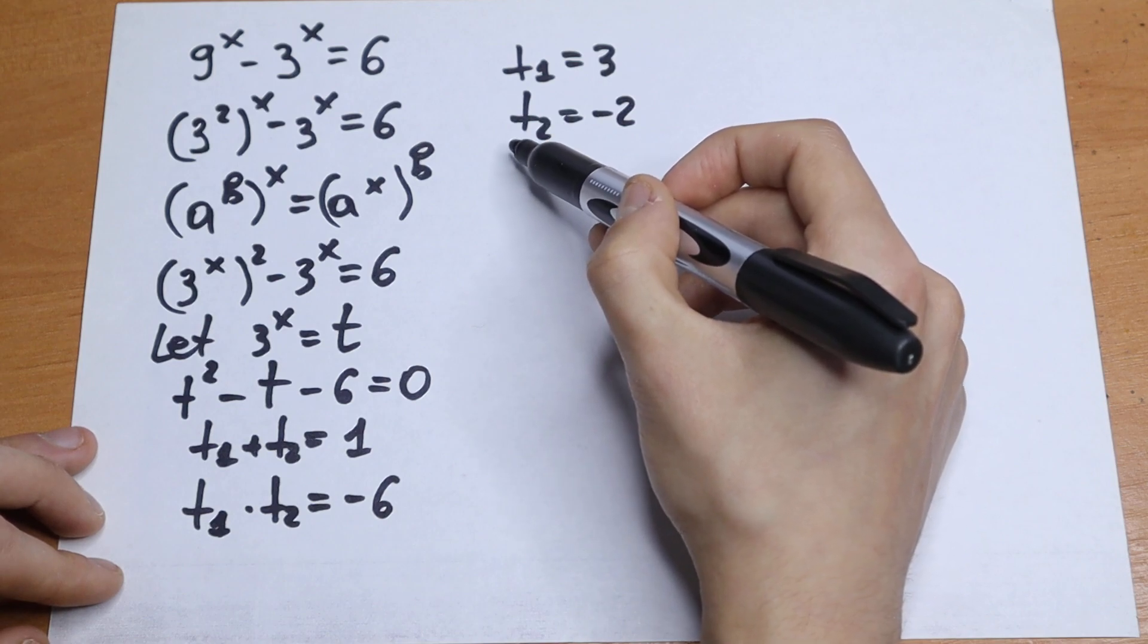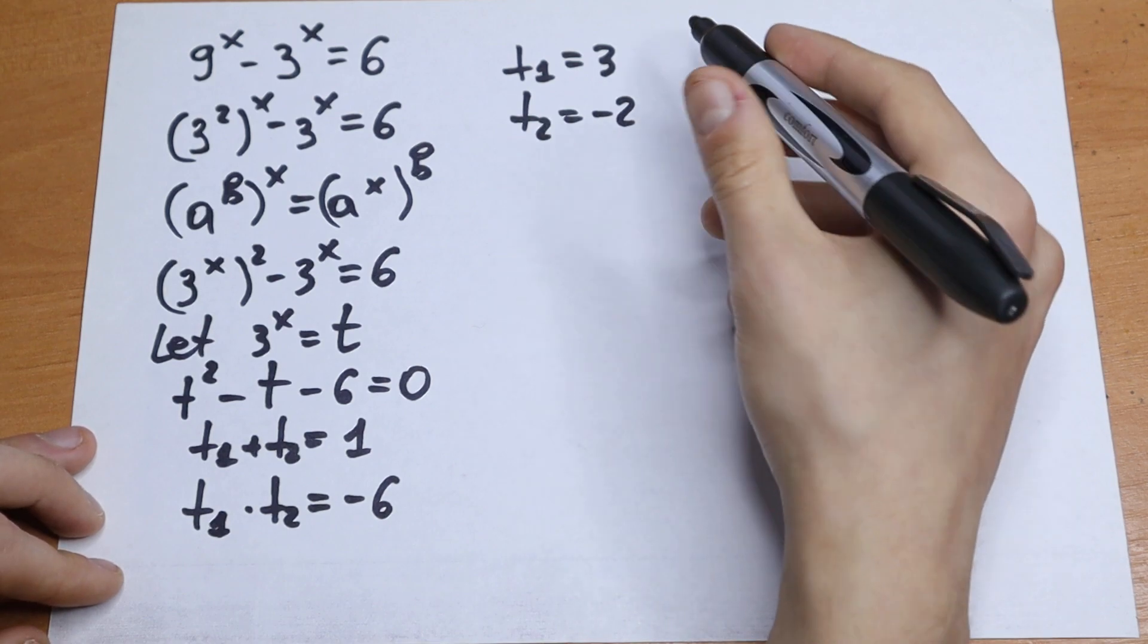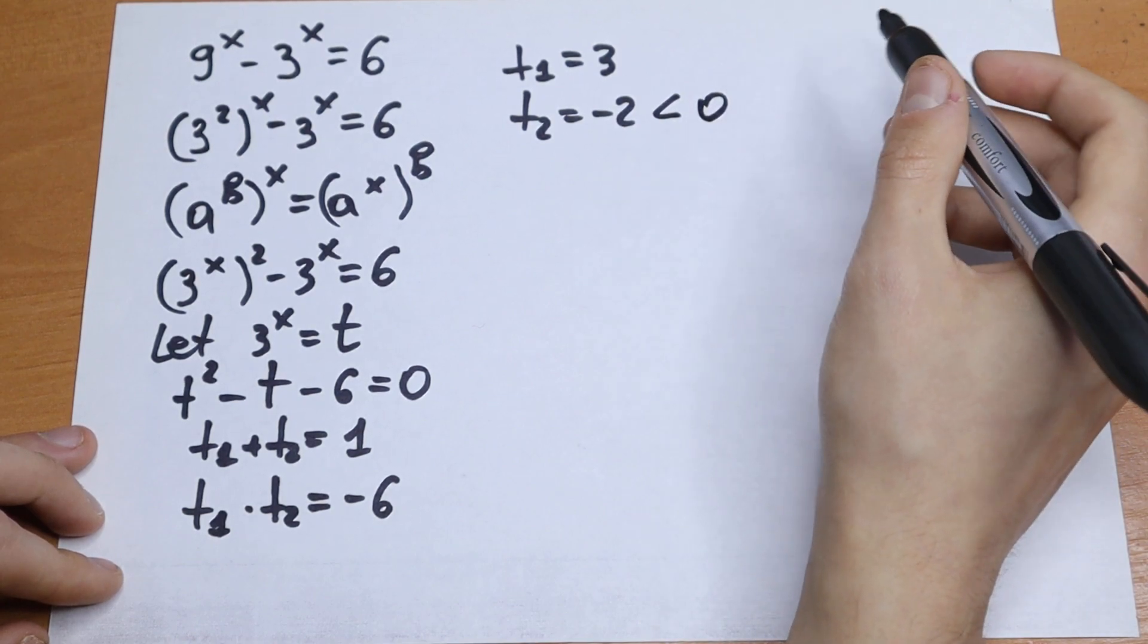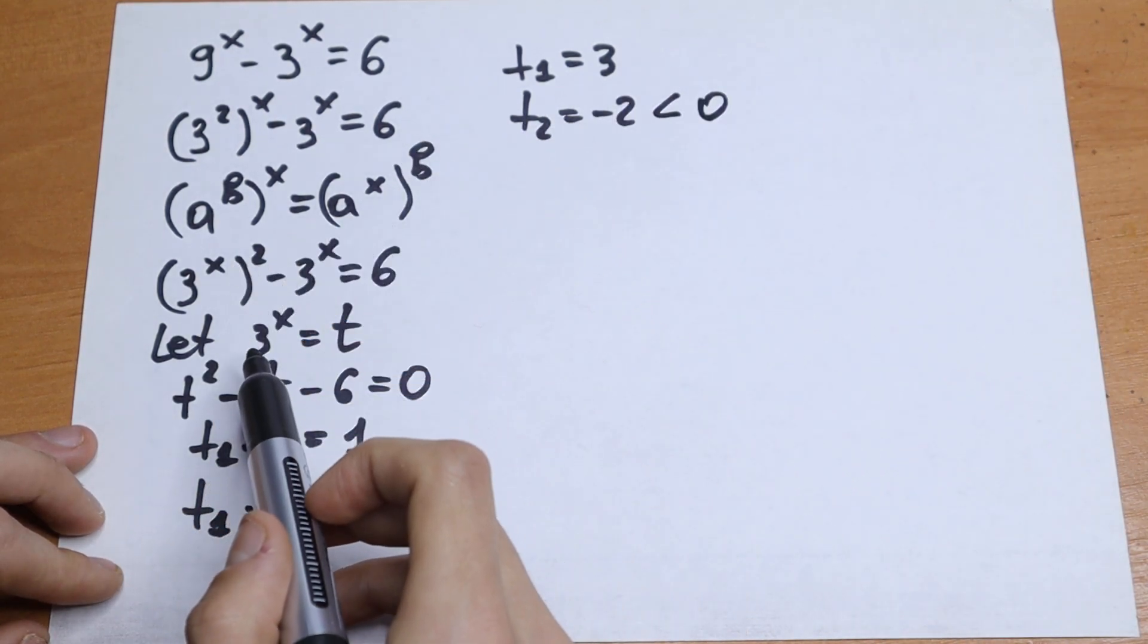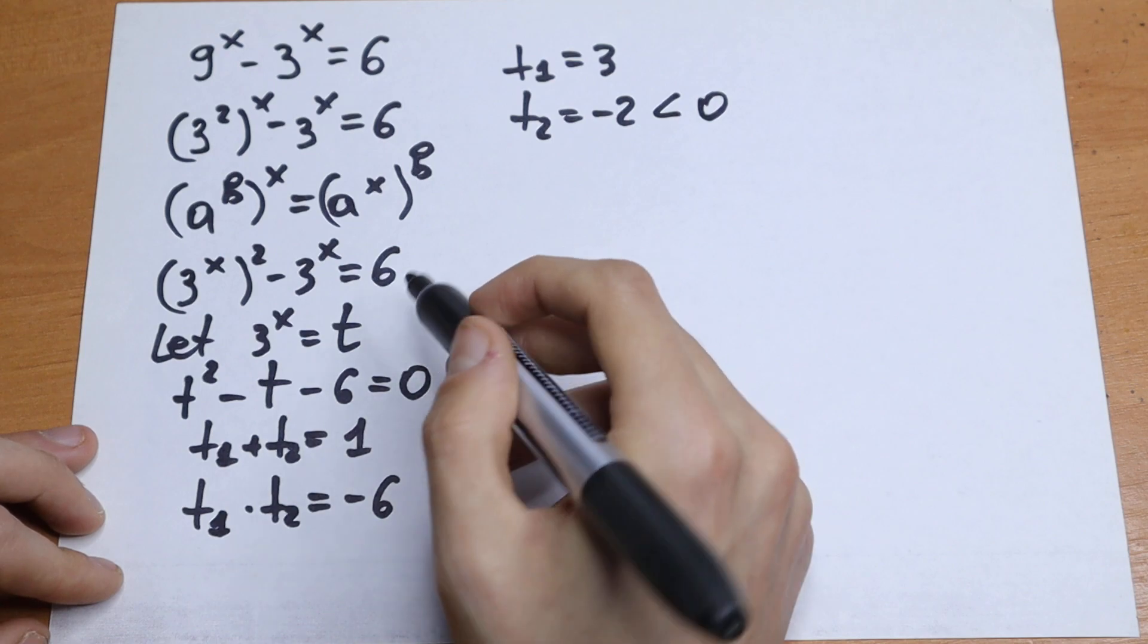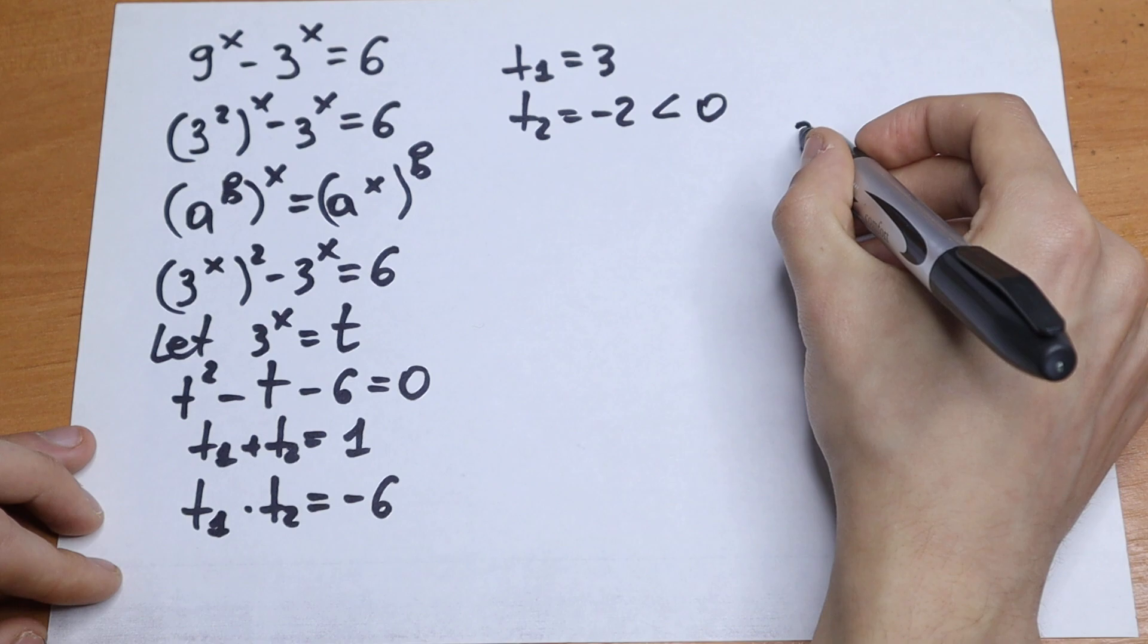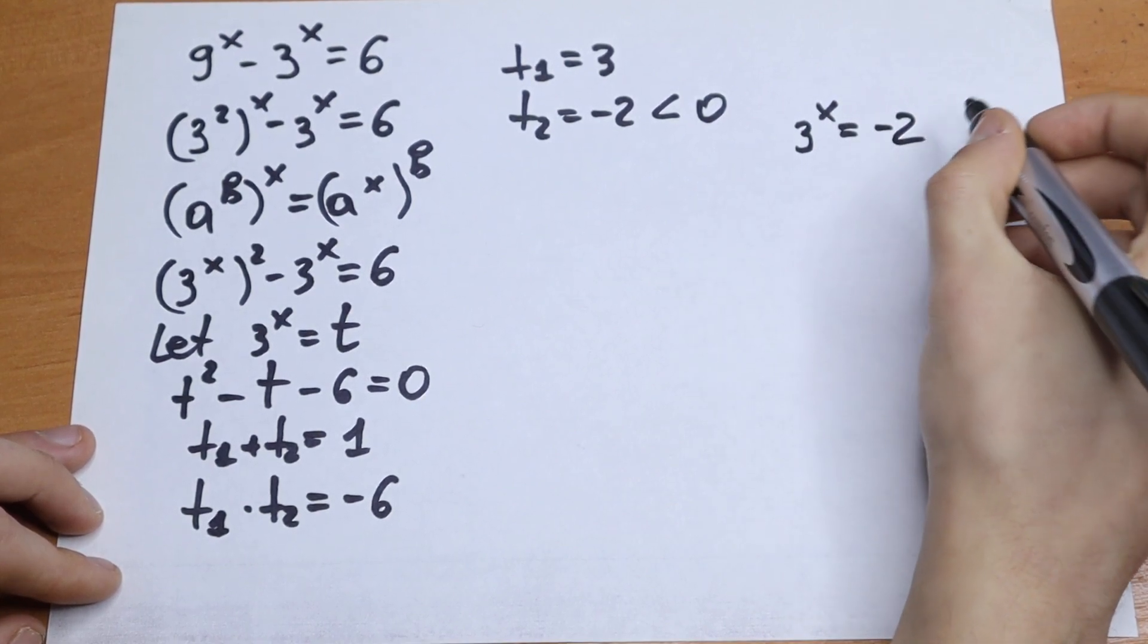But I'll take a look at this t2 equals minus 2. This minus 2 is less than 0. But t is about positive solutions because we have 3 to the power x equals minus 2.